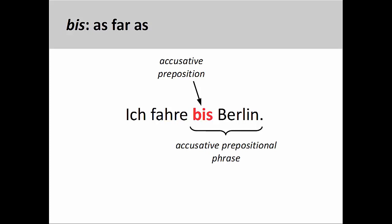'Ich fahre bis Berlin' — I am driving as far as Berlin. Here there are no adjectives in the phrase to take an accusative ending, although the entire phrase is still in the accusative case. Bis is often used in conjunction with another preposition, which will determine the case of the following object.